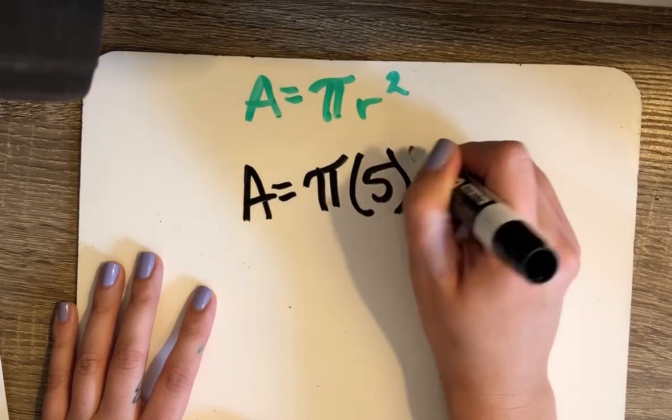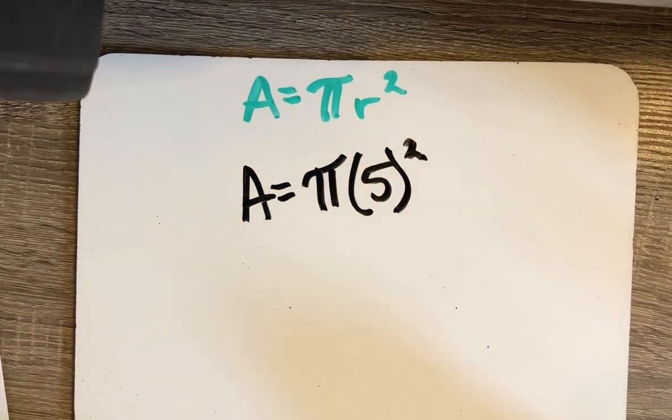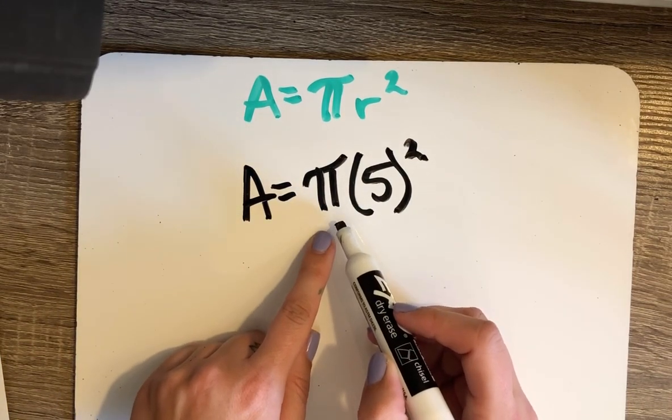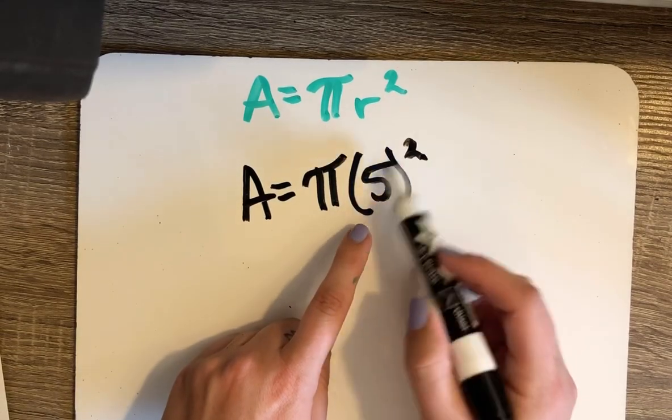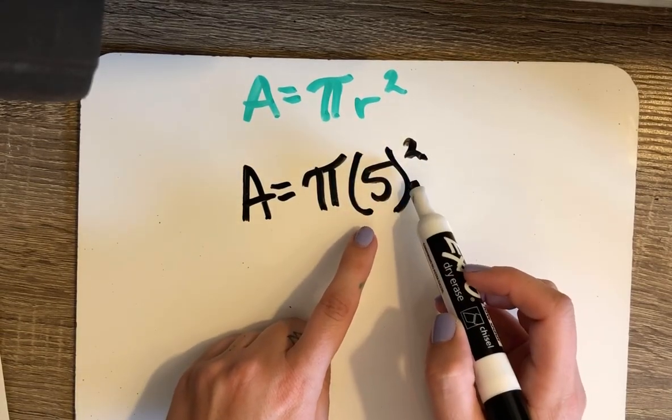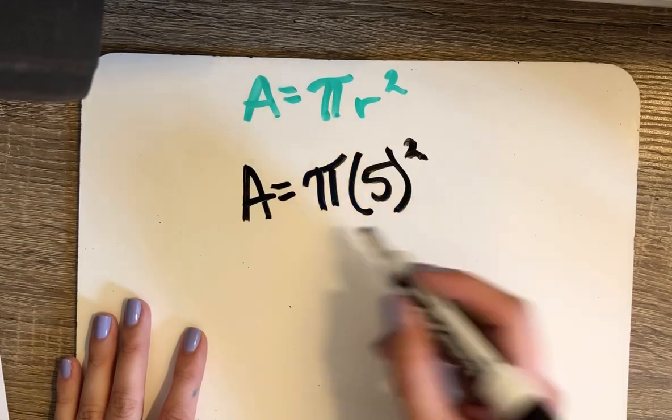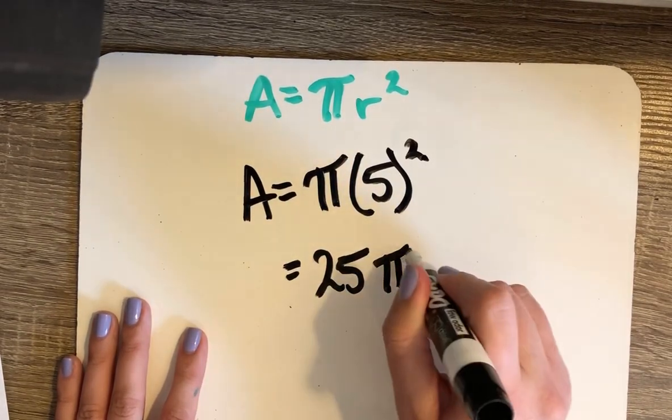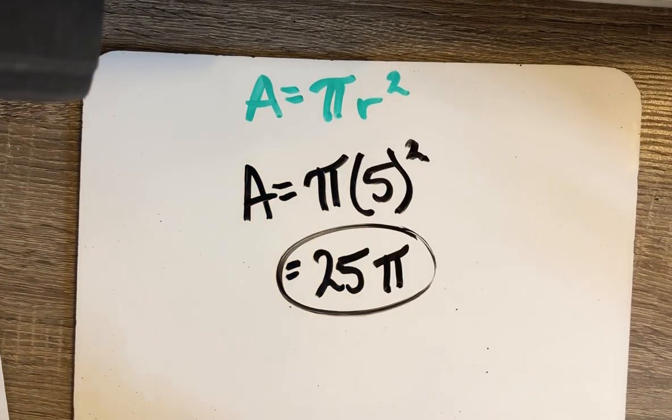Again, I'm going to leave my answer in terms of pi, which means I'm going to keep π in the answer and just worry about the other non-pi values. So I have to do 5 squared: 5 times 5 is 25. So that means the area of this circle is 25π.